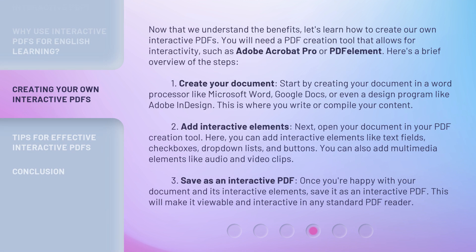Now that we understand the benefits, let's learn how to create our own interactive PDFs. You will need a PDF creation tool that allows for interactivity, such as Adobe Acrobat Pro or PDF Element. Here's a brief overview of the steps. Step 1: Create your document. Start by creating your document in a word processor like Microsoft Word, Google Docs, or even a design program like Adobe InDesign. This is where you write or compile your content.